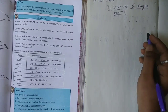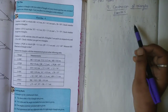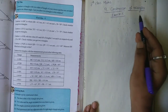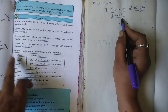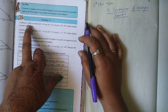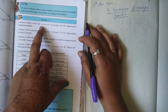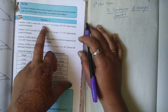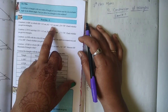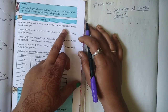Hi, welcome to my channel. Today I am going to talk about 7th class math, 9th chapter, Construction of Triangles, Exercise 5. The first question is: construct triangle ABC in which AB equals 4.5 cm, AC equals 4.5 cm, and angle B equals 50 degrees.